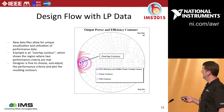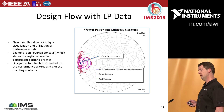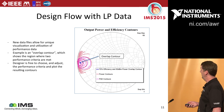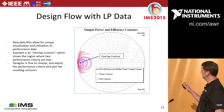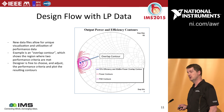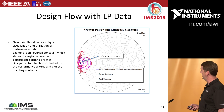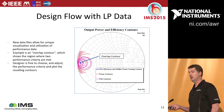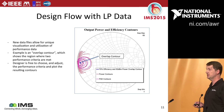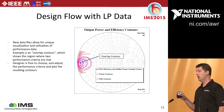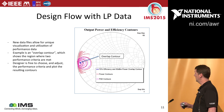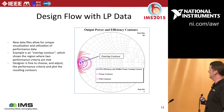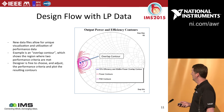Another capability is what we call an overlap contour. We start with general load pull contours for output power and PAE, then plot specific contours — for example, 50 dBm power capability and 70% PAE. The overlap contour shows the tiny locus of impedances where both design criteria are met simultaneously. If you're a base station PA designer, you're never designing for just one target — it's always multiple performance criteria. This measurement lets the designer narrow in very quickly on that region.